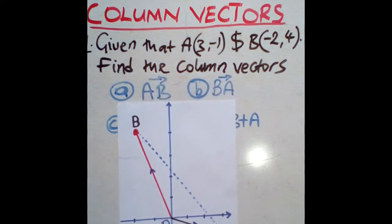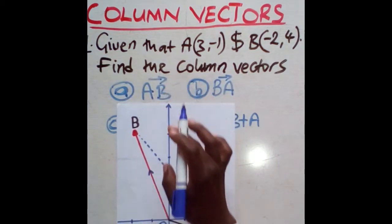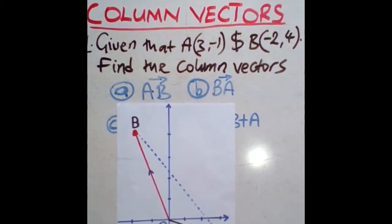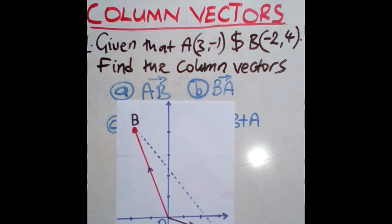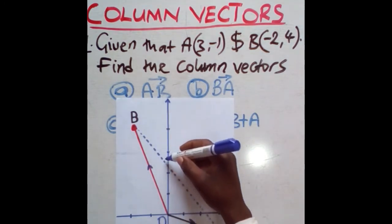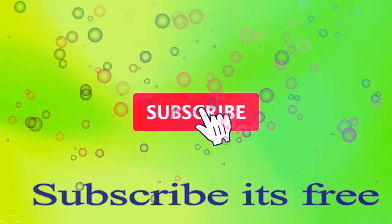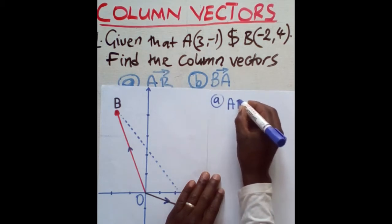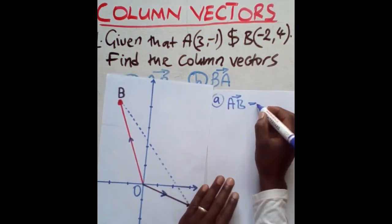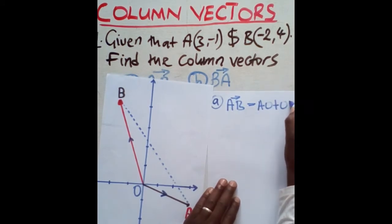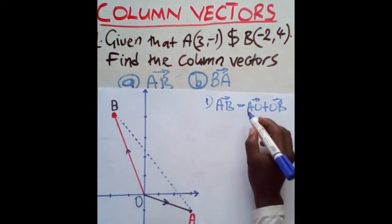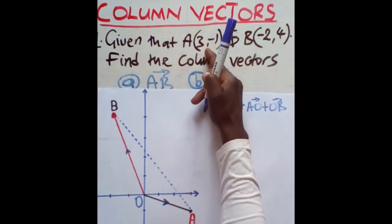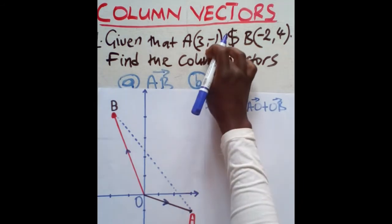The first question is to find vector AB. To find AB we use the formula: AB = AO + OB. Remember, this is OA not AO, so OA means moving from O towards A in the direction of the arrow. But we are moving from A to O, meaning we have to change the signs for the numbers.